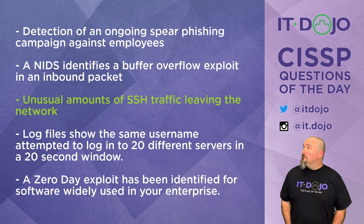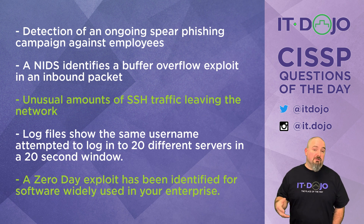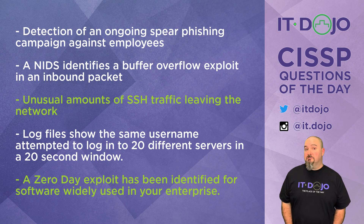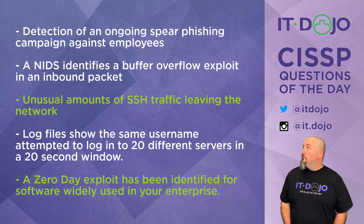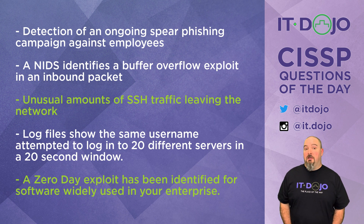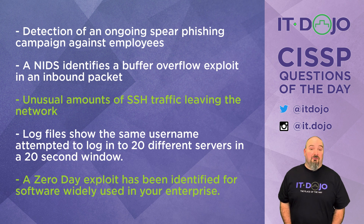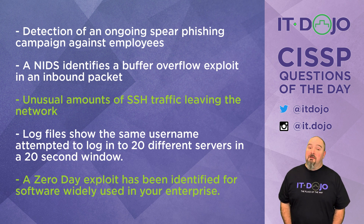So the two answers we had here: one was an indication of compromise, which was SSH traffic leaving your network in a way you consider abnormal. The other was realizing there's a zero-day exploit out there for which you have no defense, and nobody has actually come at you with it — but the fact that it's out there in the wild means that attack could be coming soon.